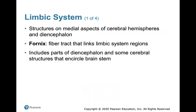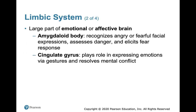The limbic system has different structures, including parts of the diencephalon and some cerebral structures that encircle the brainstem. The fornix describes the fibrotactive neurons that link the limbic system regions together. The limbic system is a large part of the emotional or affective brain — it recognizes angry or fearful facial expressions, assesses danger, elicits a fear response. Another part called the cingulate gyrus plays a role in expressing emotions via gestures and resolving mental conflicts.